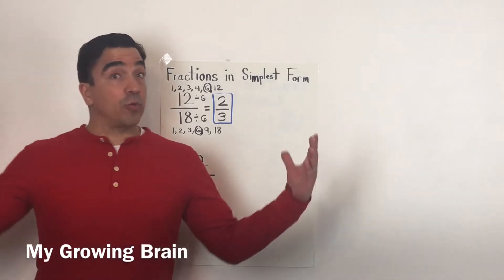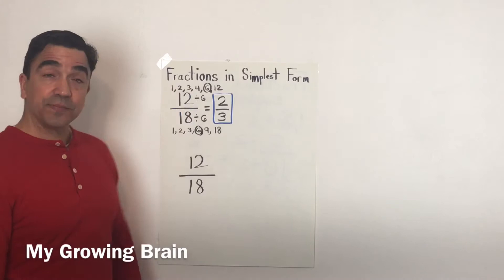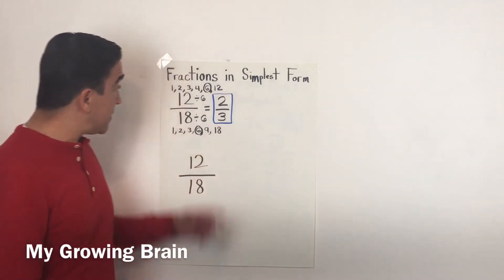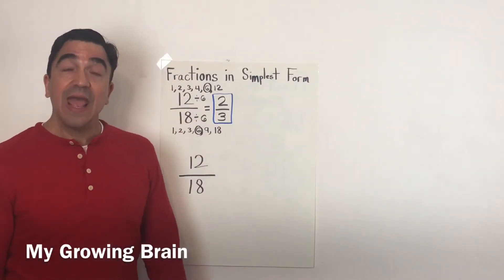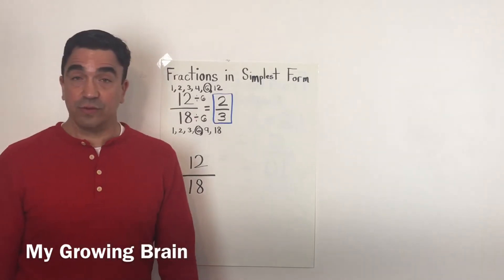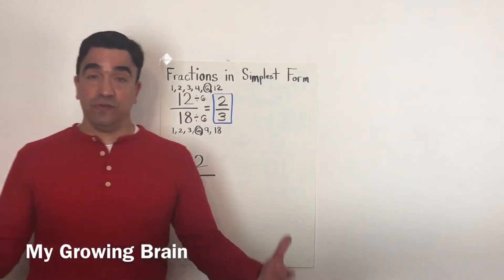We found the greatest common factor, which was 6, then we divided it by 6, and that gave us 2/3. 2/3 is in simplest form.